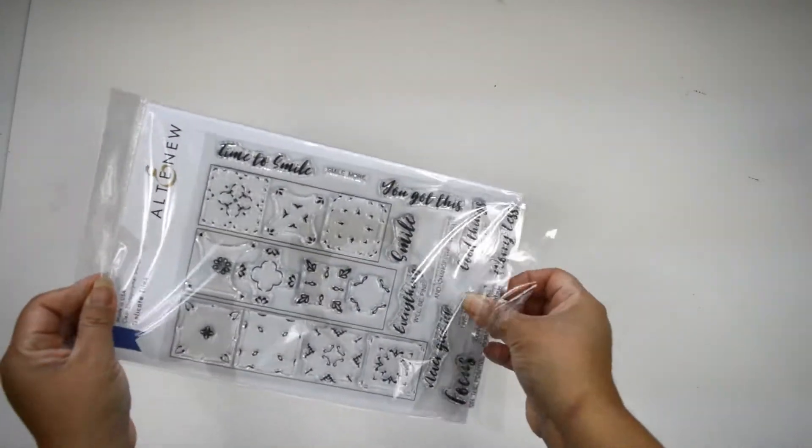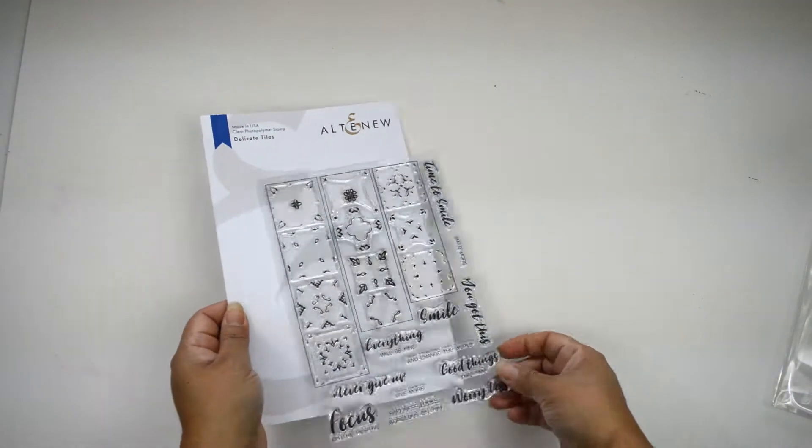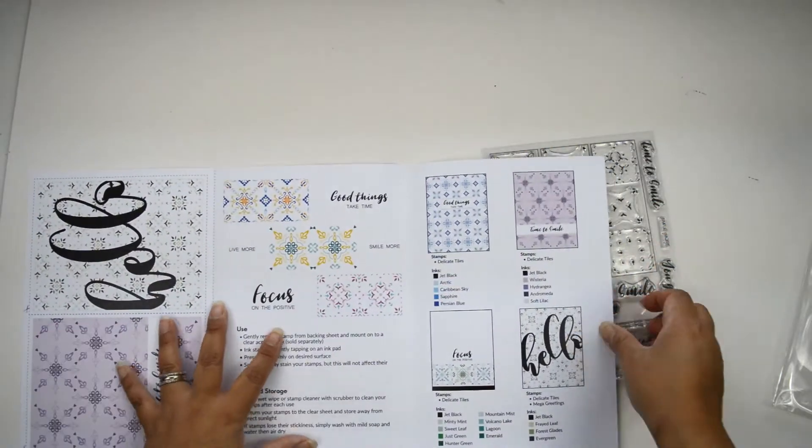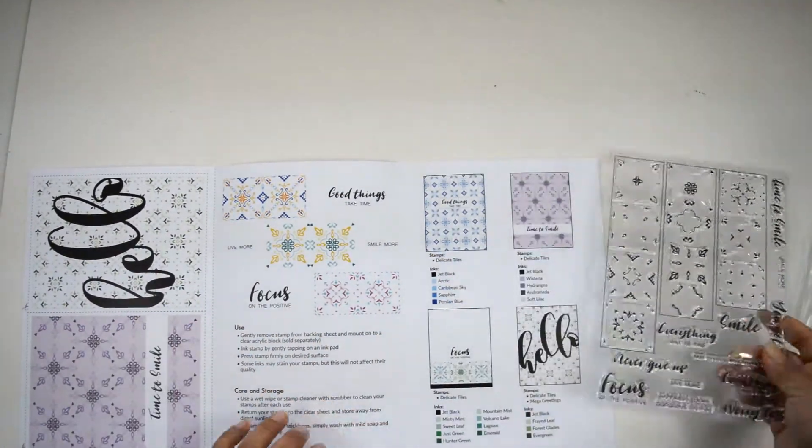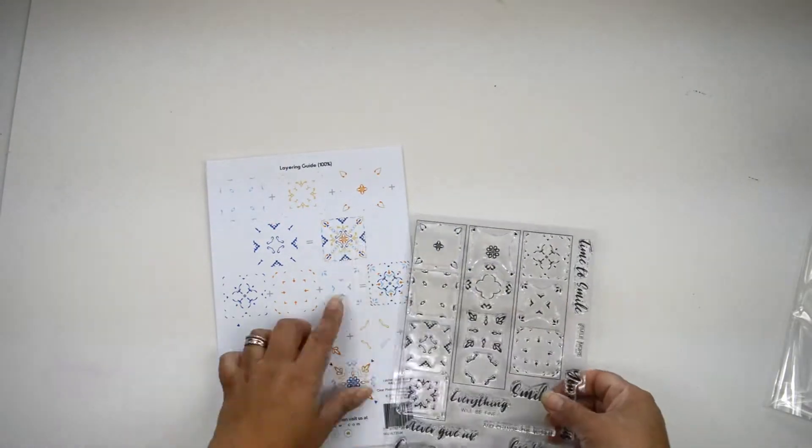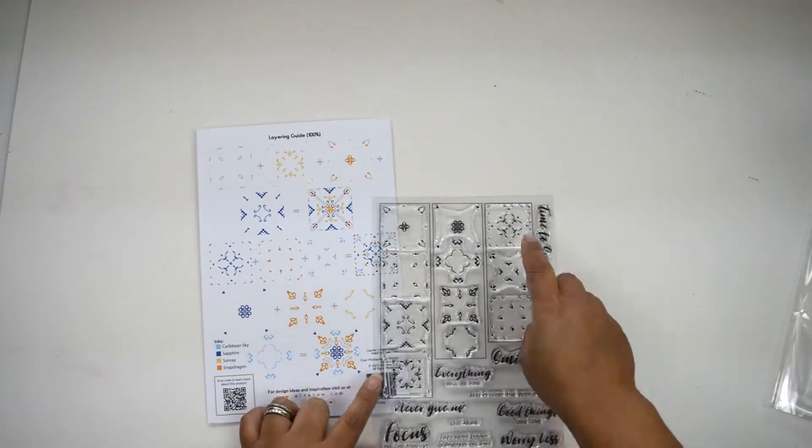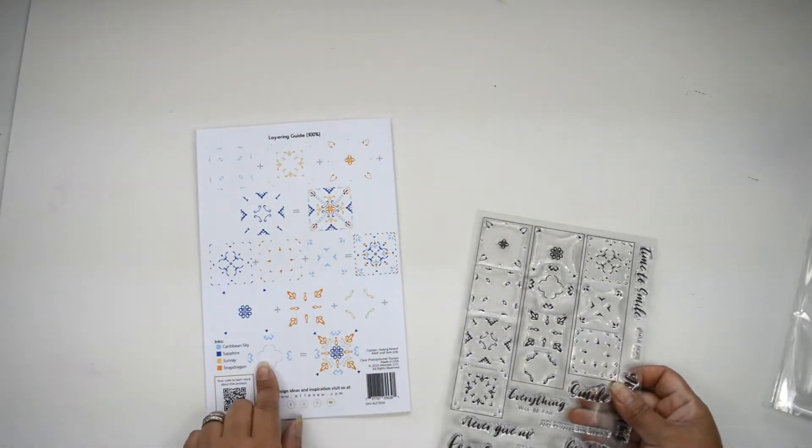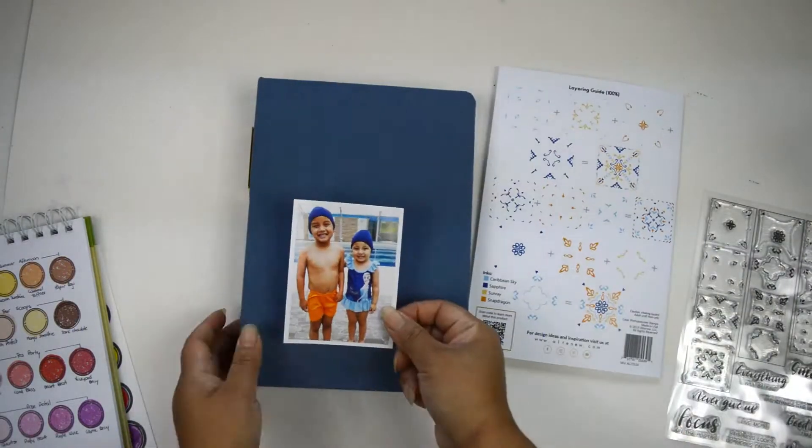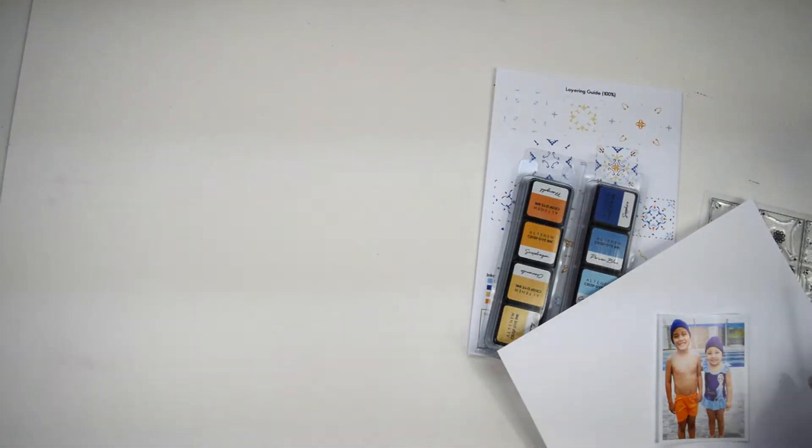This one here is going to feature the new stamp set called Delicate Tiles, and this is a building stamp. Right now I'm going to open the trifold pamphlet that comes with every stamp, and I'm going to pick up the colors from the example they have there that actually match the picture I had, which was just a coincidence. I really love building stamps because that gives you and opens the opportunity to create different backgrounds, make it unique, and make it your own.